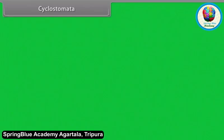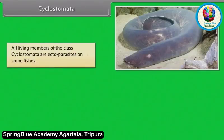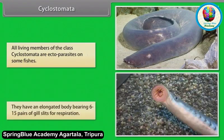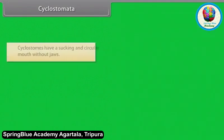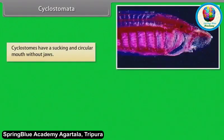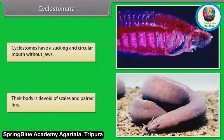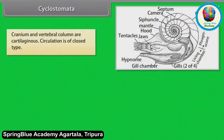All living members of the class Cyclostomata are ectoparasites on some fishes. They have an elongated body bearing six to fifteen pairs of gill slits for respiration. Cyclostomes have a sucking and circular mouth without jaws. Their body is devoid of scales and paired fins. Cranium and vertebral column are cartilaginous. Circulation is of closed type.